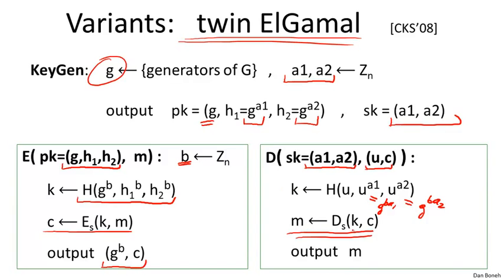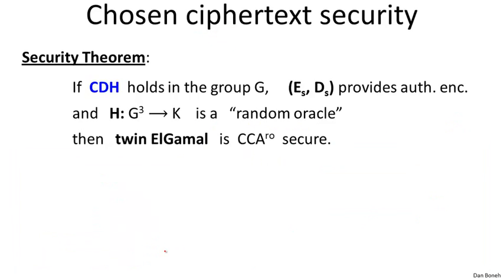The decryptor decrypts the ciphertext using the symmetric system and outputs the message M. This is a very simple modification to regular Elgamal: we stick one more element in the public key, hash one more element during encryption, and similarly during decryption — nothing else changes. The ciphertext is the same length as before. The amazing thing is that this simple modification allows us to prove chosen ciphertext security directly based on the standard computational Diffie-Hellman assumption, still assuming a symmetric encryption system with authenticated encryption and a hash function modeled as a random oracle.